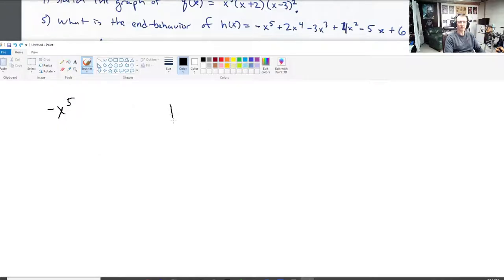It looks something like this. Some wiggles here in the middle. So this is all you need to help you determine end behavior. So, as x goes to infinity. What does the height of our graph do?